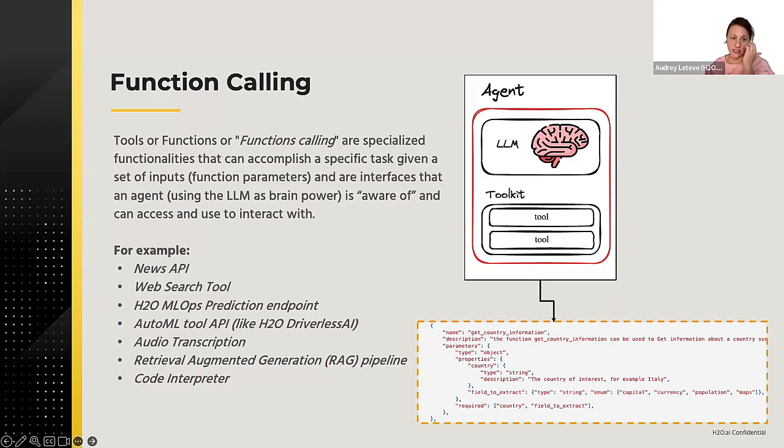Now, obviously, those tools can be very different. They can be news API, for example, web search tool. They could be an endpoint to a machine learning model, or they can be even like launching an AutoML tool to be able to build a ML pipeline. They could be using an existing audio transcription service, or even like be using a code interpreter. The idea is that this description, by being baked into the agent system prompt, it lets the agent know which tools can be used for what purpose and what attributes they require.